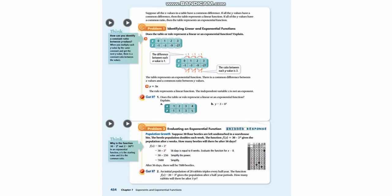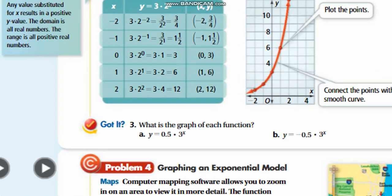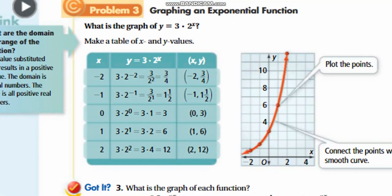Moving to the next page: the exponential function is in the form y equals a times b to the power x. They insert x values of negative 2, negative 1, 0, 1, and 2, obtain the corresponding y values, and plot the points. The resulting shape is the characteristic curve of an exponential function.